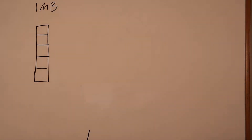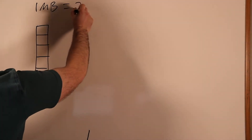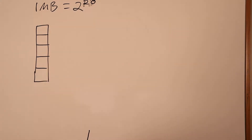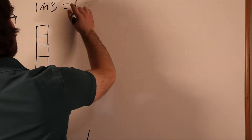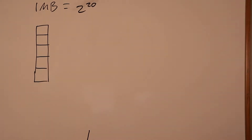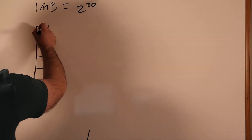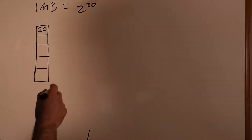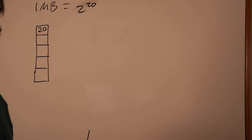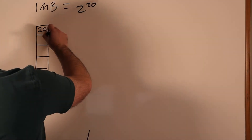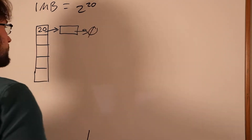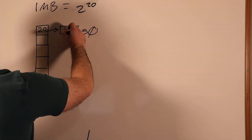With a one megabyte heap, the largest size we deal with is one megabyte blocks, which are 2 to the 20 bytes. So slot 20 in our array stores blocks of size 2^20. When we initialize this heap, we end up with one thing on that free list: a single block that is one megabyte.